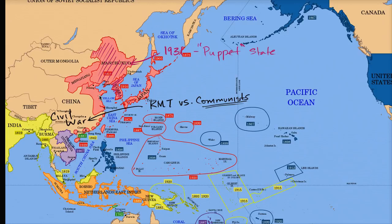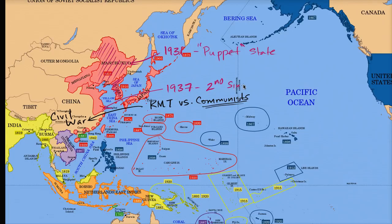That continues through the 30s until 1937, when the Japanese used some pretexts — the Marco Polo Bridge incident — as justification for an all-out war with China. In 1937, you have all-out war. This is often referred to as the Second Sino-Japanese War. It's called the second because there was another Sino-Japanese War in the late 1800s.